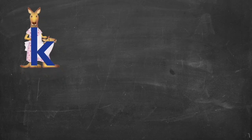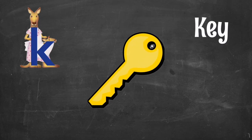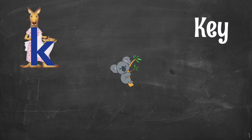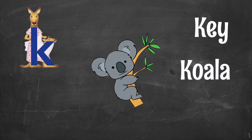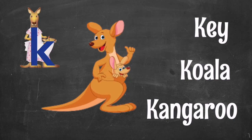Let's think of words that have K at the beginning. K, K, Key. K, K, Koala. K, K, Kangaroo.